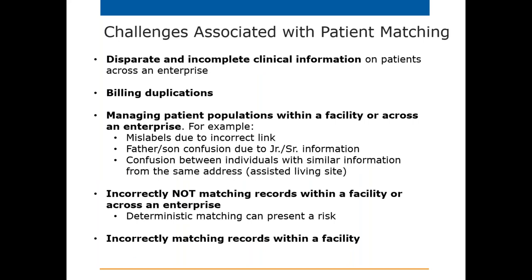Challenges associated with patient matching include duplicates and disparate or incomplete clinical information on patients across an enterprise. If there are two records within the same system, there could be clinical information on both, and you want those aggregated to have a complete clinical record. Billing duplications — sending a bill to the same place twice — should be minimized. Managing patient population within a facility or across an enterprise also involves mislabels, father-son confusion, junior-senior information, babies, John Doe's, and same-sex twins, which is another common issue.